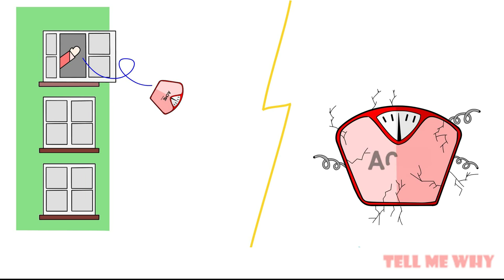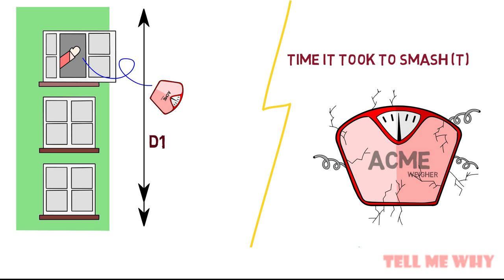Although the costly weighing machine is now completely trash, you have two crucial info for determining the mass of the Earth. The distance of the top floor to the ground and the time it took to smash. With the help of these two measurements, we can determine its acceleration towards the Earth.